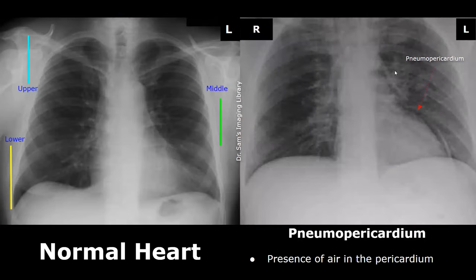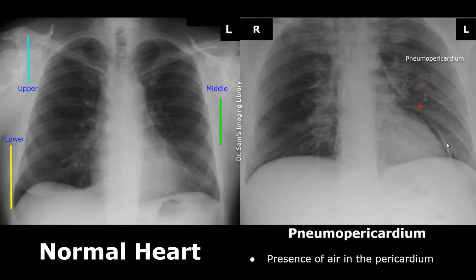Pneumopericardium refers to the presence of air in the pericardium. On X-ray it will appear as a radiolucent or dark area surrounding the heart, and this dark area will be surrounded by a thin bright or radio-opaque line — that is the pericardium. The dark area is the air, and this is a feature of pneumopericardium.